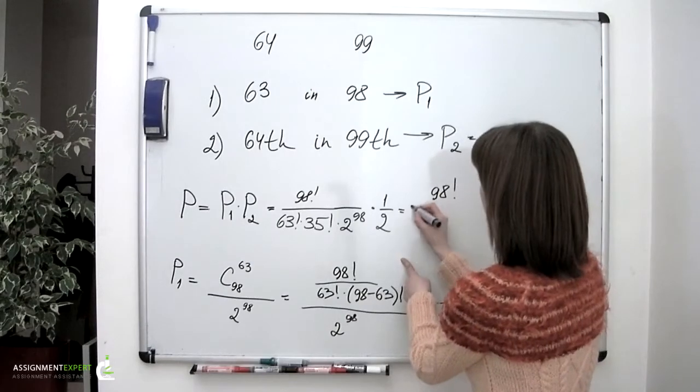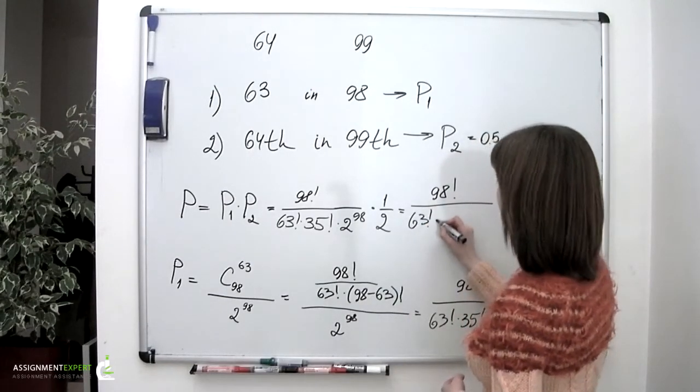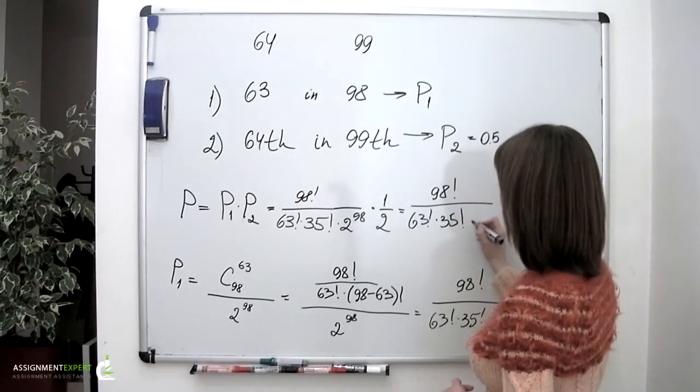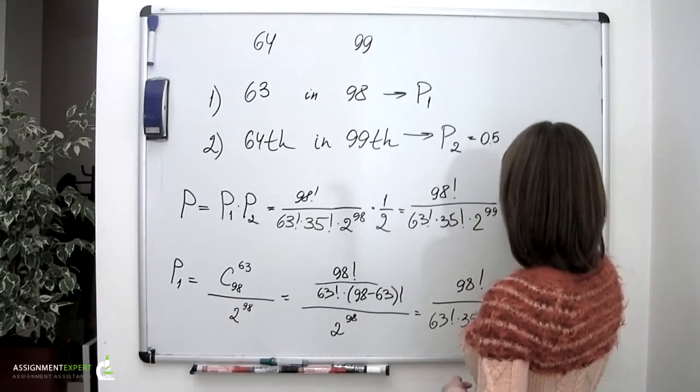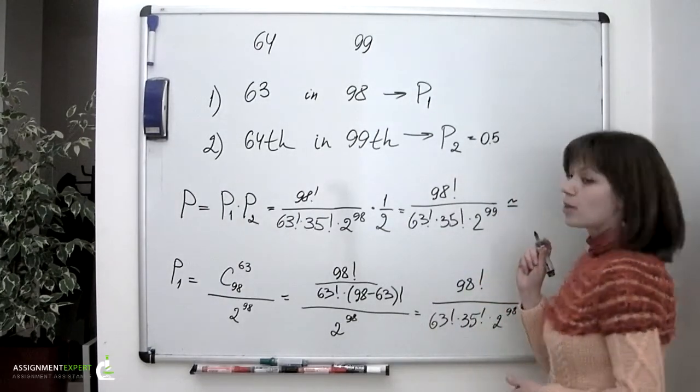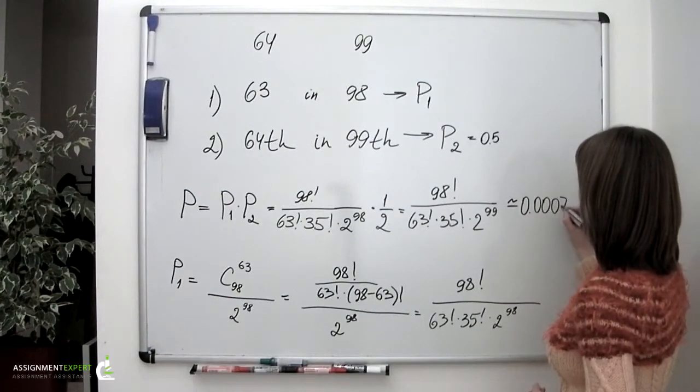98 factorial divided by 63 factorial times 35 factorial and times 2 to the 99th power which is approximately equal to 0.00073.